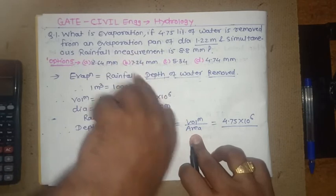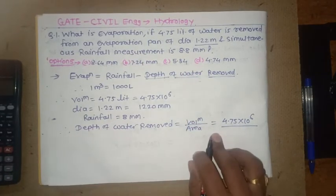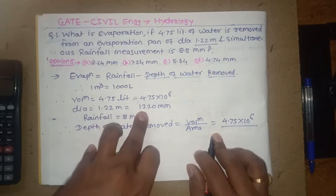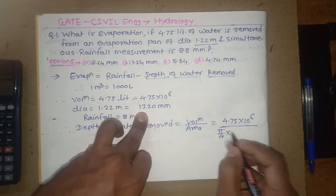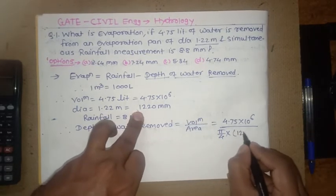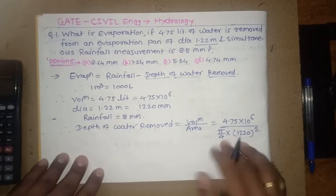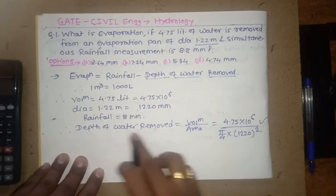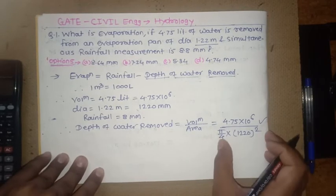What is the volume? Volume is 4.75 × 10^-6 upon area. Now the pan is circular in shape so consider area of circle here. Diameter is given, therefore by the formula π/4 × d^2, that is diameter 1220 squared.